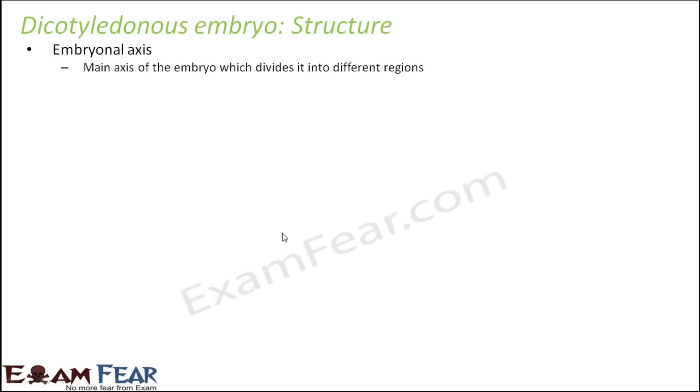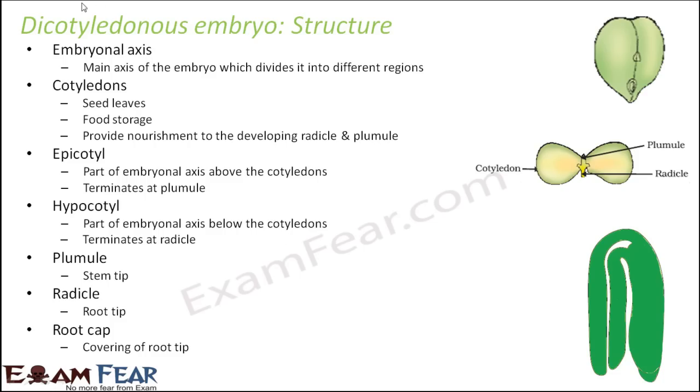Now let us look at the structure of the dicot embryo. A dicot embryo is dicotyledonous, meaning there will be two cotyledons. The important parts of the structure of a dicot embryo are: the embryonal axis, cotyledons, epicotyl, hypocotyl, plumule, radicle, and root cap.